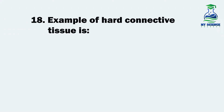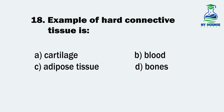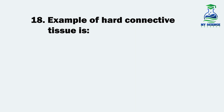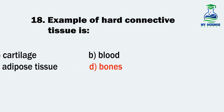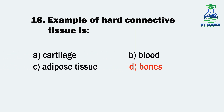Question 18. An example of hard connective tissue is: A. Cartilage, B. Blood, C. Adipose tissue, or D. Bones. Let us see what is the correct option. It's D. Bones.